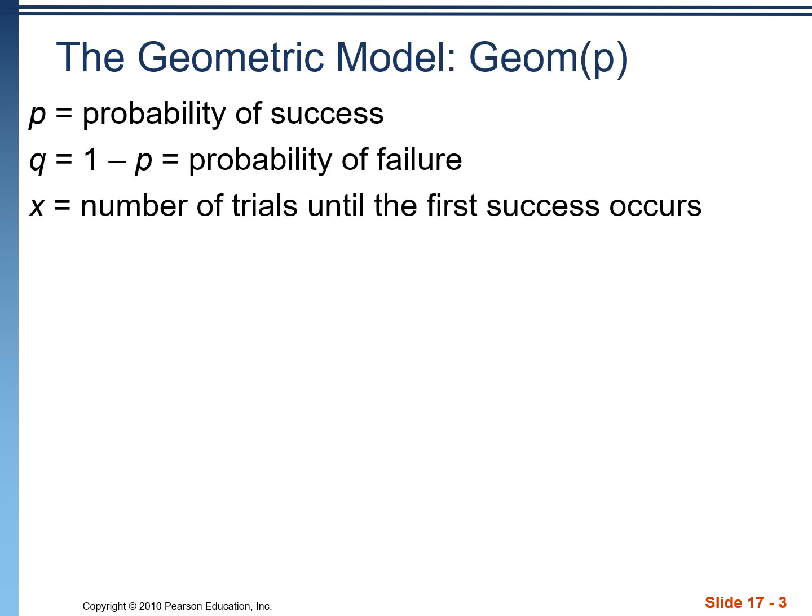You're gonna see some of these variables throughout the chapter. When it's talking about P, it's just talking about the probability of success. Q is the complement of that, that's the probability of failure. Everything is in one of those two outcomes. And then we have X, which is the number of trials until we get our first success.